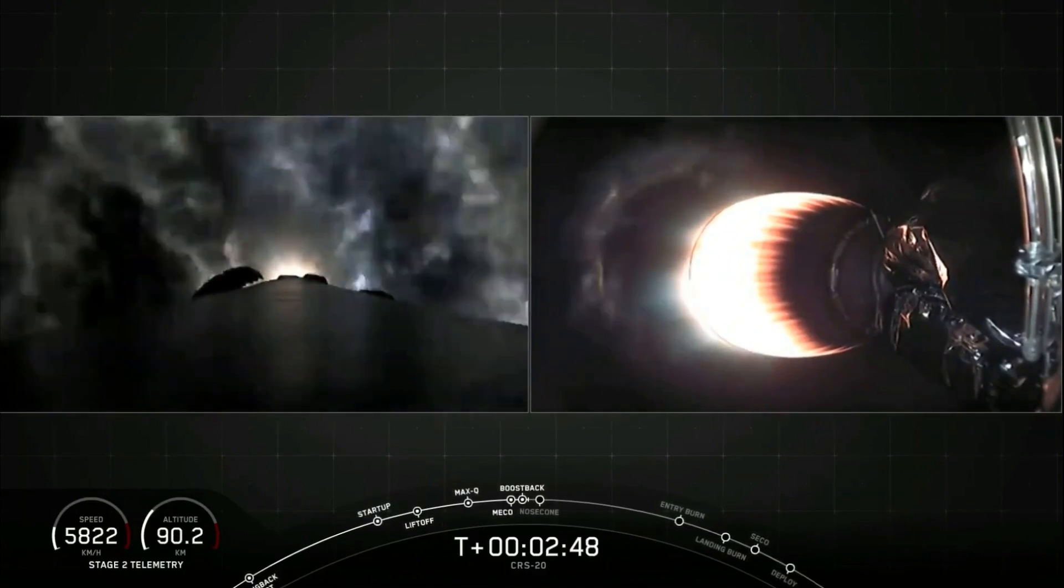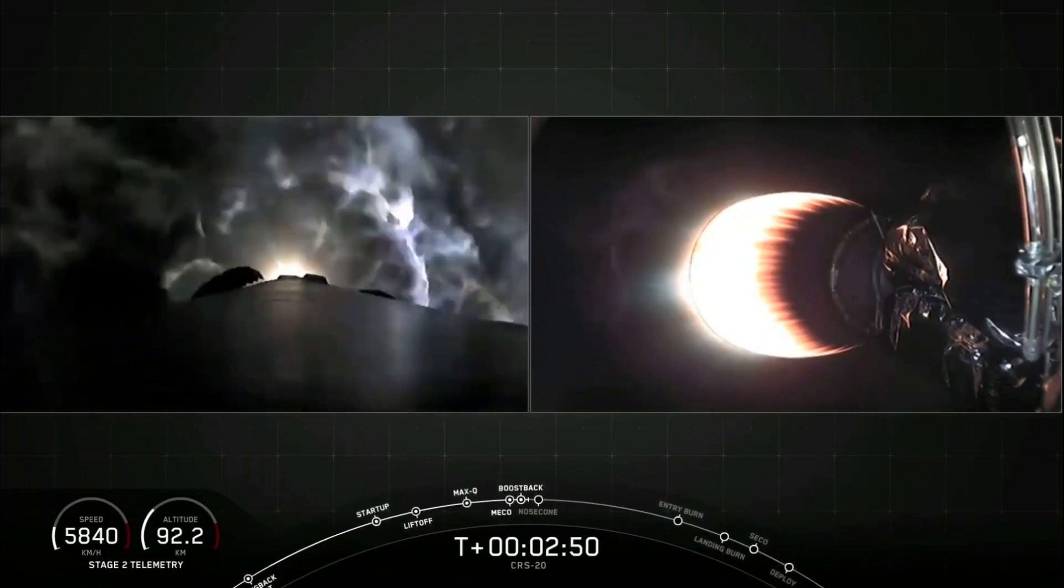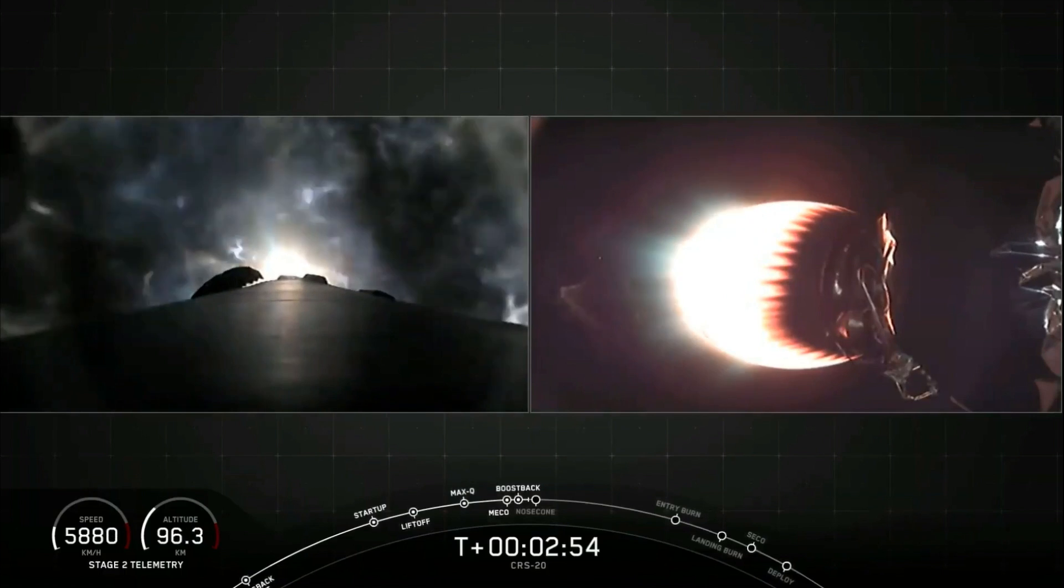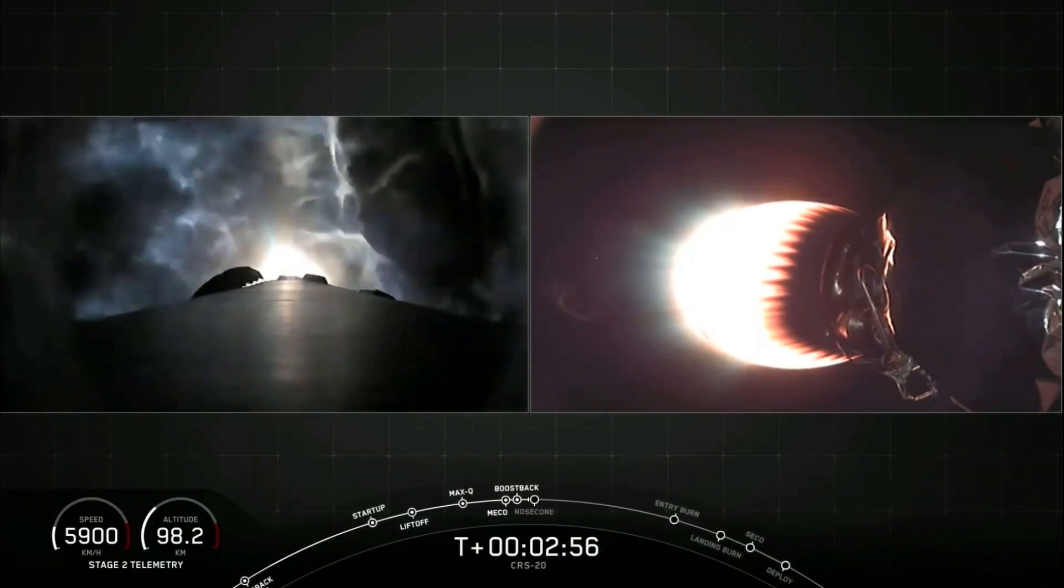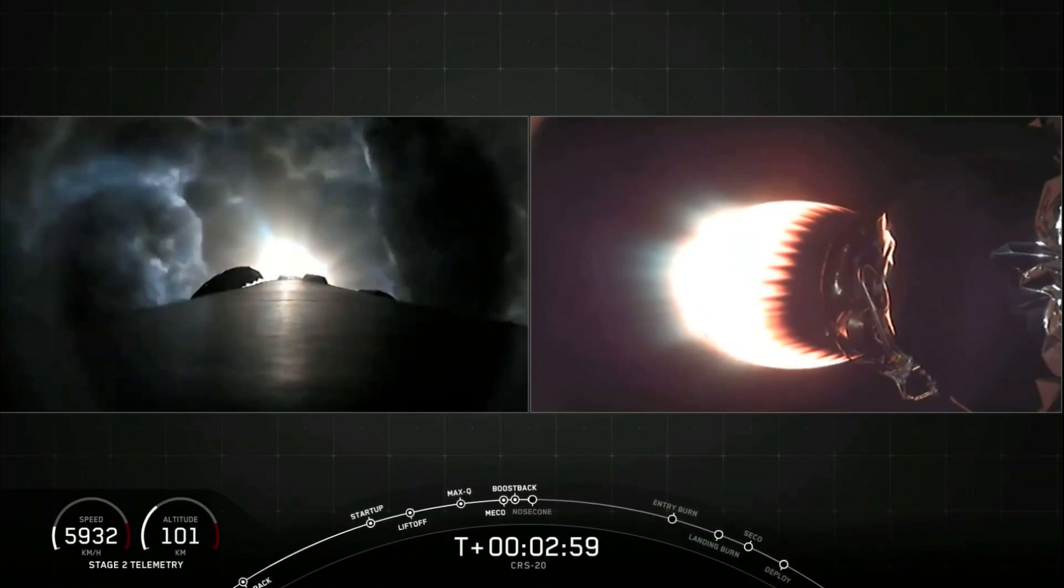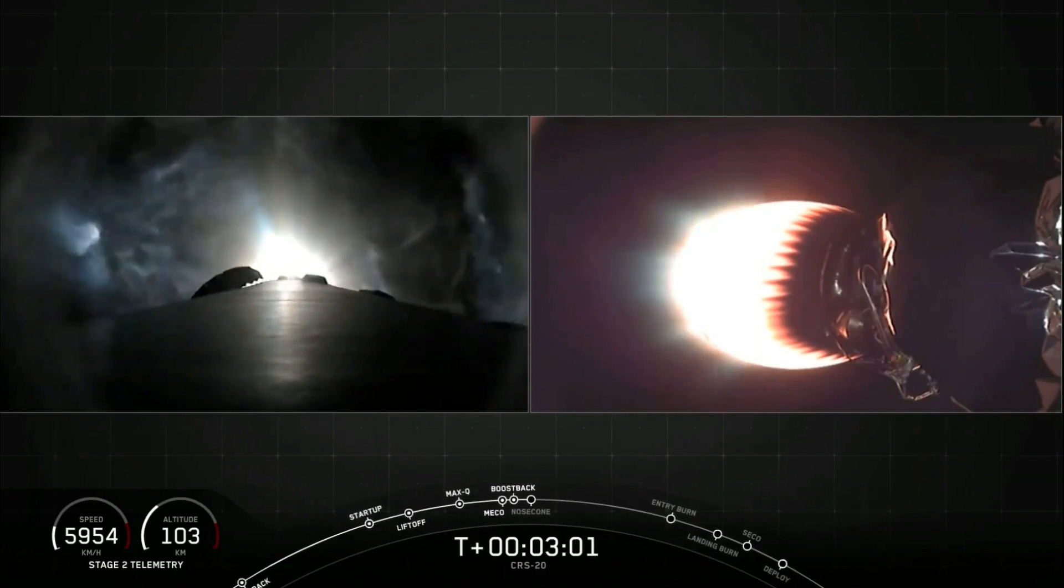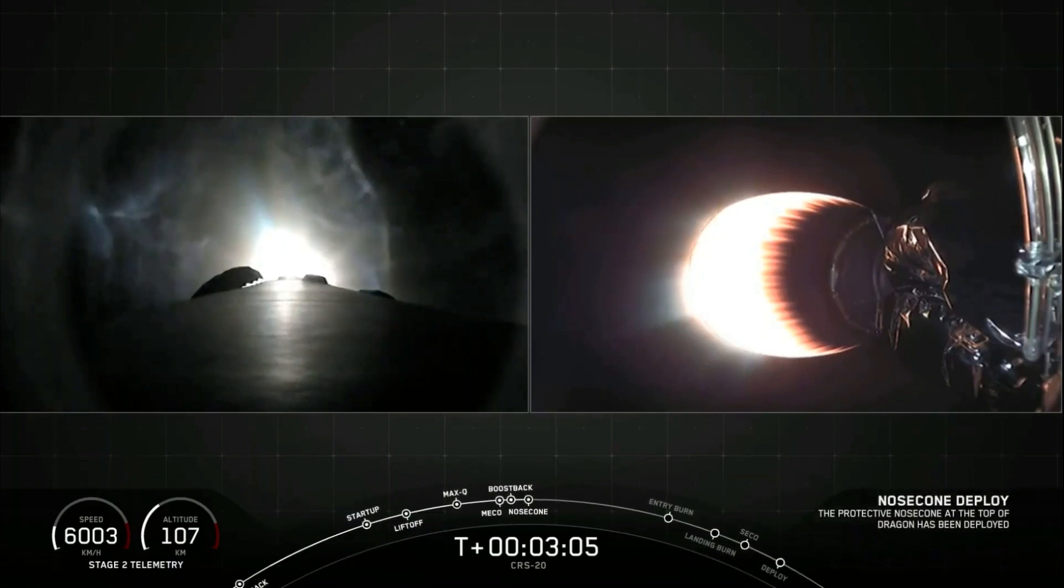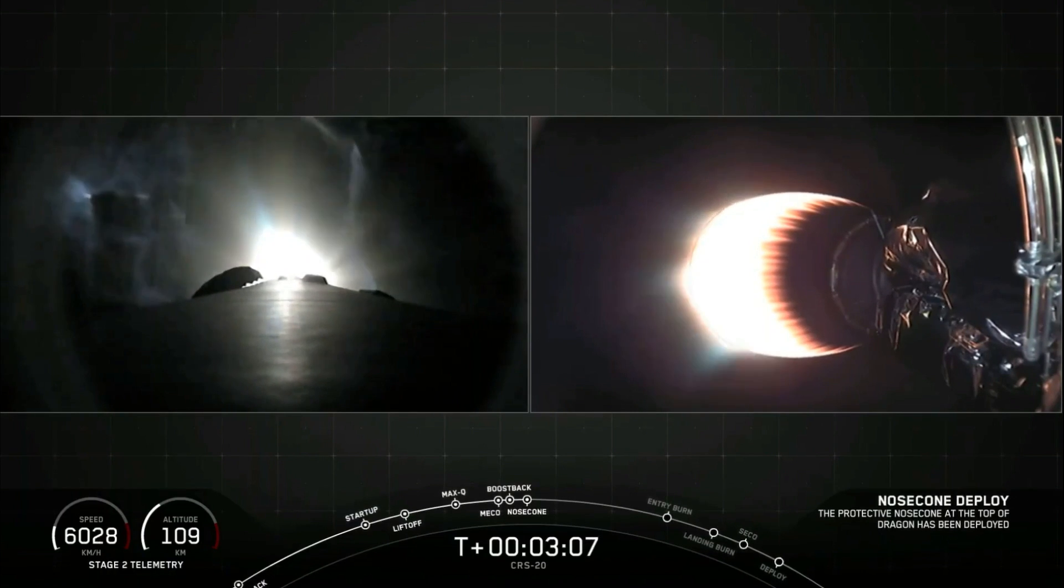On the left-hand side of your screen, we have an amazing visual of the first stage as it is performing its boostback burn. Now this is the first of three maneuvers that the first stage will be performing. As Jessie mentioned earlier, we will be landing back at Landing Zone 1 on the coast of Florida at Cape Canaveral. So the first stage has to completely reorient itself and head back west.